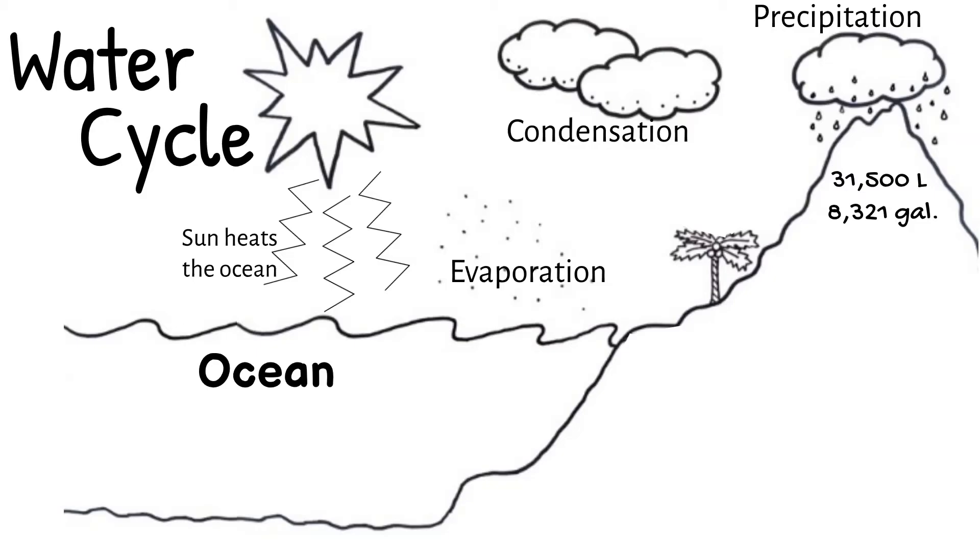A lot of the precipitation that falls is soaked up by the ground. This water in the ground is called groundwater. Plant roots are able to soak up this water, as well as people often dig wells to access it.